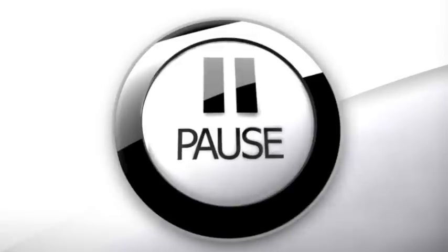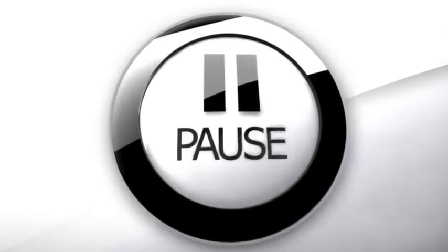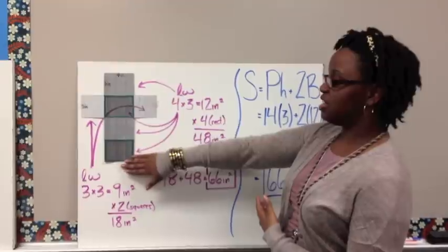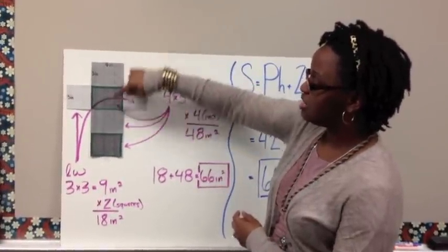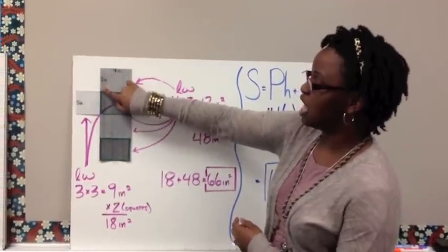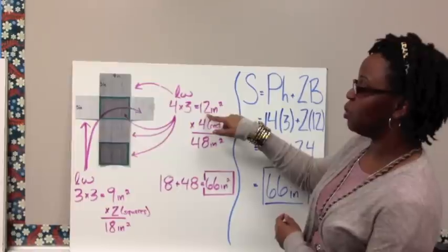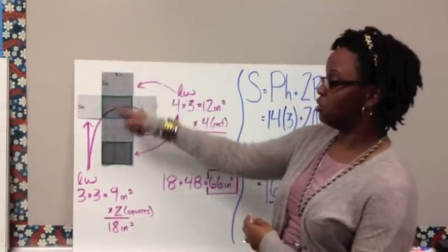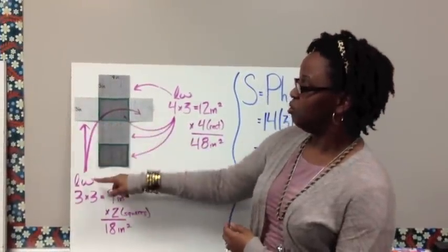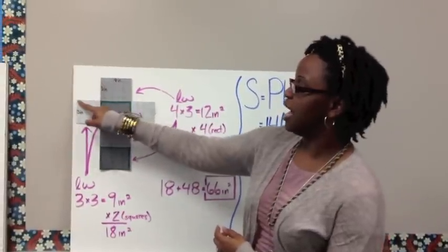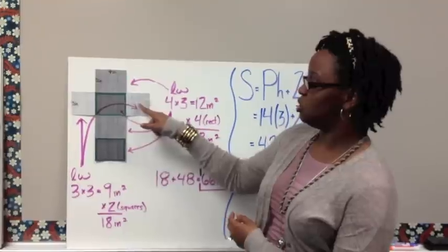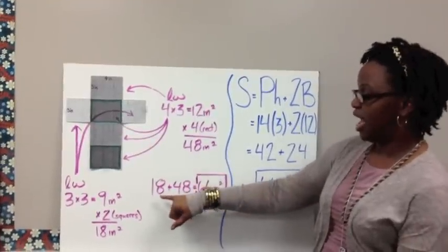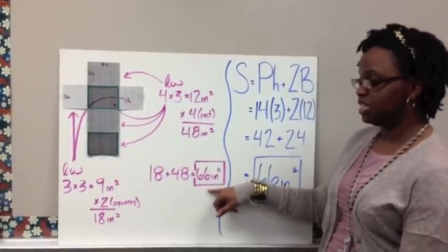Go ahead and try example 2. Here's the solution. We've unfolded that figure and you can see the net. These faces, as well as your bases, are all 4 by 3. So 4 times 3 gives an area of 12, but there are 4 of them that are the same size, so 12 times 4 gives an area of 48 for those 4 faces. Then for the sides, 3 times 3 gives an area of 9, and since there are 2 of them, that's 18 inches squared, covering all 6 sides. Adding 18 plus 48 gives a surface area of 66 inches squared.